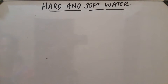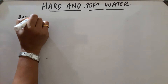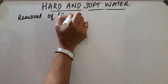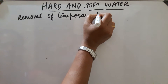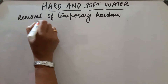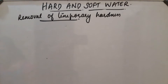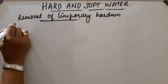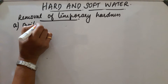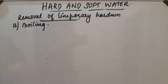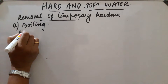Softening of water — removal of temporary hardness. There are two methods to remove temporary hardness. The first method is boiling. While boiling hard water, magnesium bicarbonate gets converted into magnesium hydroxide, and calcium bicarbonate gets converted into calcium carbonate. These two precipitates are obtained and can be removed by filtration.